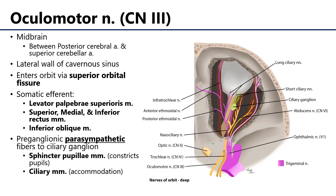The oculomotor nerve is somatic efferent to a variety of extraocular muscles, including the levator palpebrae superioris muscle, the superior rectus, the medial rectus, and the inferior rectus muscle, as well as the inferior oblique muscle.